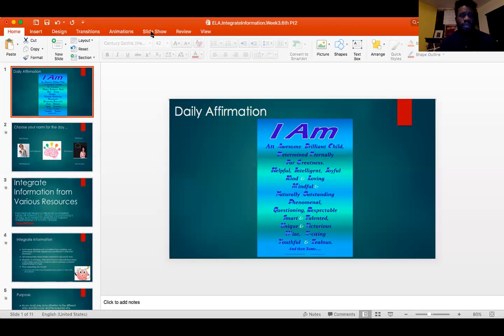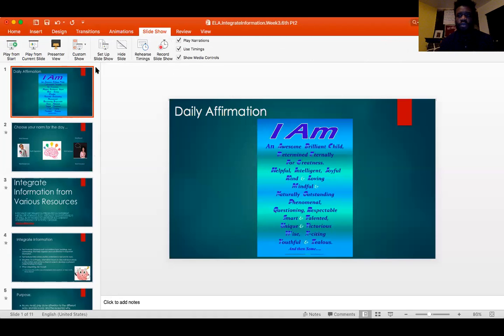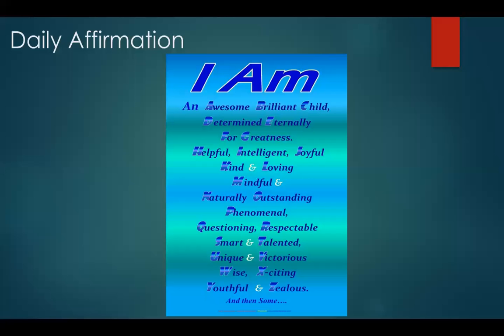We will begin with our affirmation as we normally do. I am an awesome, brilliant child. Determined eternally for greatness. Helpful, intelligent, joyful, kind, loving, mindful, and naturally outstanding. Phenomenal, questioning, respectable, smart, talented, unique, and virtuous wise. Exciting, youthful, and zealous. And then some.